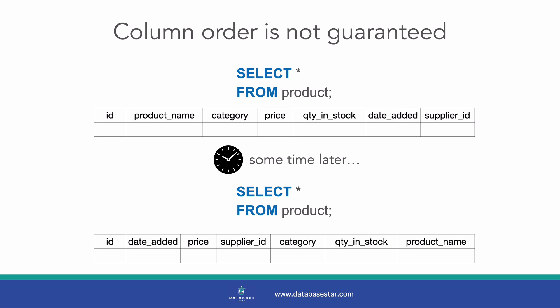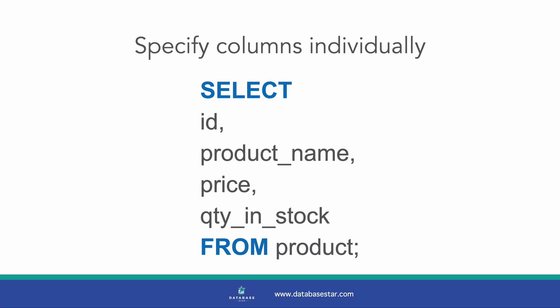The second reason is that the order of columns is not guaranteed. You may use a SELECT STAR query to get all columns in a table, and the columns are shown in a certain order. You could then run the same query on a later date, and get the columns in a different order. This is because the order of the columns when using SELECT STAR is not guaranteed. They may be in the order that they are created, or the database may return them in a different order. This may be an issue in your application or your results if you expect them in a certain order. The better way to handle this is to specify the columns you need individually. Add each column to the SELECT clause, separated by a comma. That way you only get the columns you need, and they are in the order that you specify.